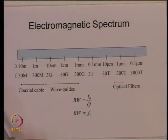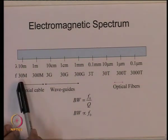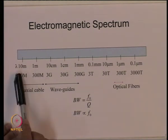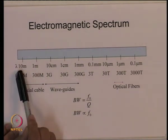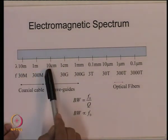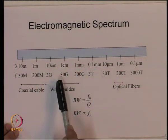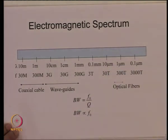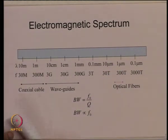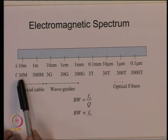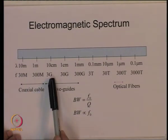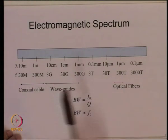Let us look at the electromagnetic spectrum. Here we have wavelengths going from 10 meters, 1 meter, 10 centimeters, 1 centimeter, 1 millimeter, 0.1 millimeter, 10 micrometers, 1 micrometer, and 0.1 micrometer, which correspond to frequencies from 30 megahertz, 300 megahertz, 3 gigahertz, going all the way up to 300 gigahertz.